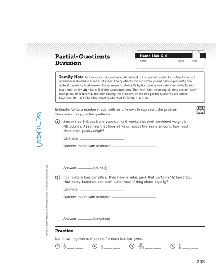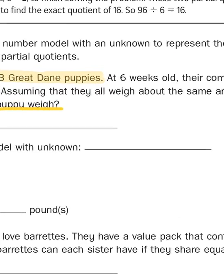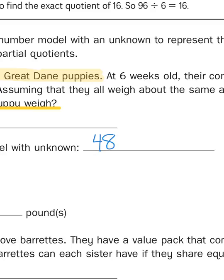I'm actually going to highlight the information because it will be easier to see. Jordan has three Great Dane puppies. At six weeks old, their combined weight is 48 pounds. Assuming that they all weigh about the same amount, how much does each puppy weigh? Since the title of this homelink is division, we can assume that they want us to divide, so that will be our action plan. I'm going to create a number model: 48 pounds divided amongst three puppies, and we need an unknown, so I'll use the letter P for puppies.